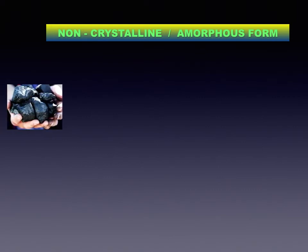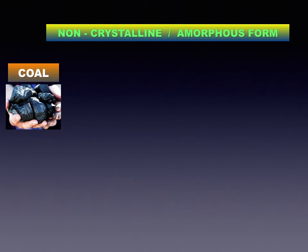Next we shall see the non-crystalline or amorphous forms of carbon. The arrangement of carbon atoms in this form is not regular. Coal and coke are the non-crystalline forms of carbon. Coal is a fossil fuel. It contains carbon, hydrogen, and oxygen. It also contains nitrogen, phosphorus, and sulfur. It occurs in solid state and is of four types.